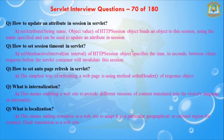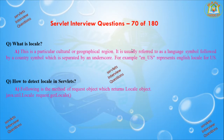The next question is: what is locale? Locale refers to a particular cultural or geographical region. It is usually referred to as a language symbol followed by a country symbol, separated by an underscore. For example, en_US represents the English locale for the US — indicating which language is shown for that region.